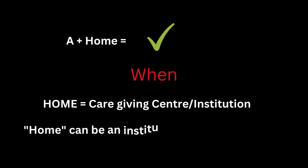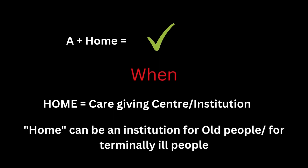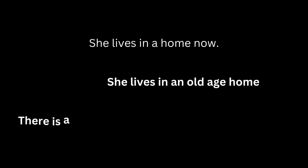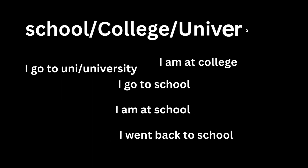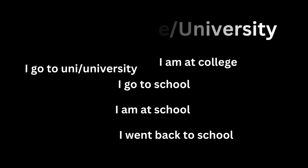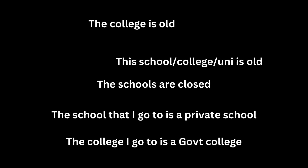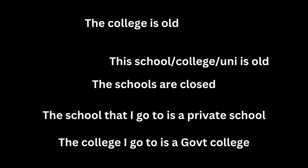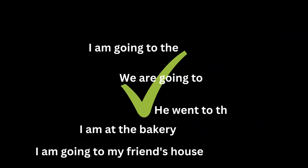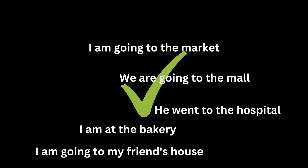With common nouns you do add articles. For example: 'the mall', 'the shop', 'it is a shop', 'this is the shop that I'm talking about', 'this is a bazaar', 'this is the Sunday bazaar'. In this building there are different offices — 'I work at the office' or 'I work at an office'. So you use articles 'the', 'a', 'an' with common nouns referring to locations in general.